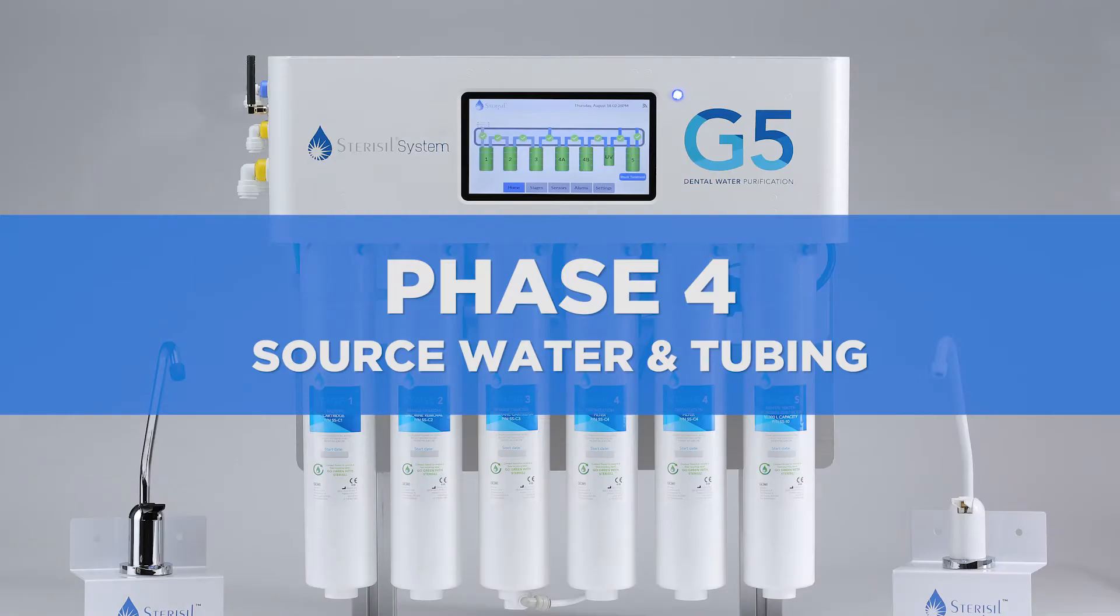Phase four, source water and tubing. In phase four, you'll be linking the peripheral components with tubing and preparing the municipal source line to supply the G5 with water.